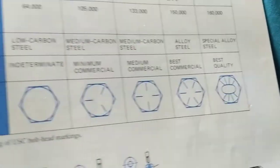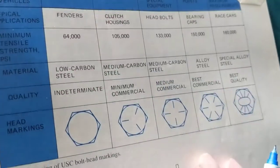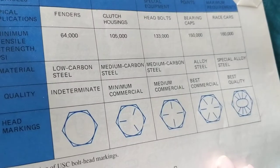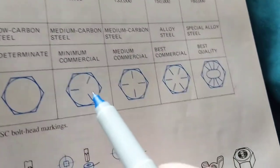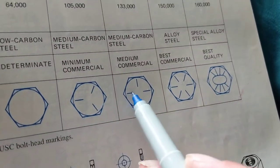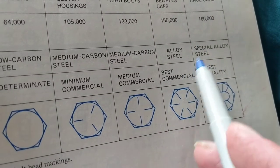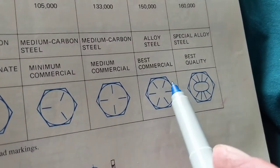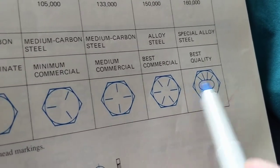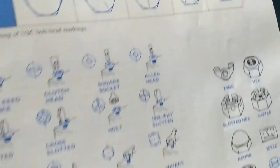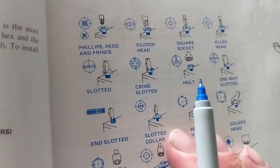Now let's look at the markings. This is the description of standard versus metric: as we spoke before, the more markings on a standard bolt, the stronger it is. For commercial use we use this; for best quality we use all these markings. This is what we use in automotive, and it's pretty helpful.